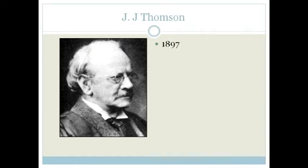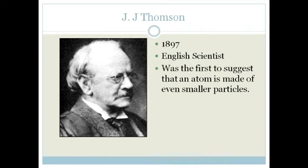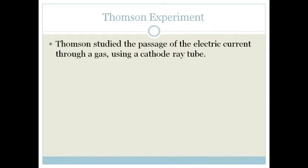Next was Mr. J.J. Thompson. He was busy in 1897. He published his work. And he was doing experiments as well. He was an English scientist. And he was the first person to suggest that an atom is made up of even smaller particles. And again, this was experimental.